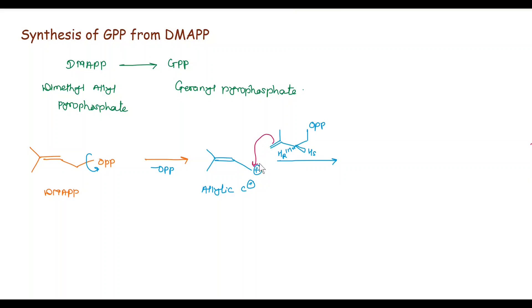So this double bond attacks this electron-deficient carbon and we get here double bond, here CH2, CH2, here CH, CH3, here CH2, here OPP, here HR and HS, and here positive charge.